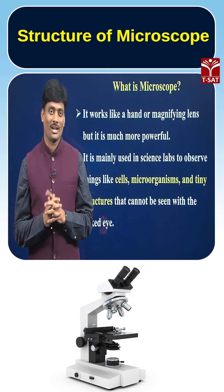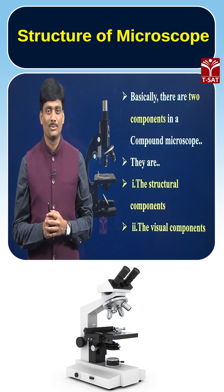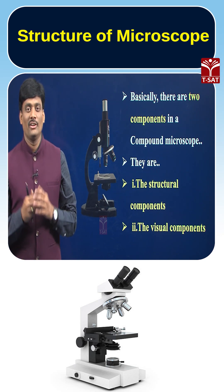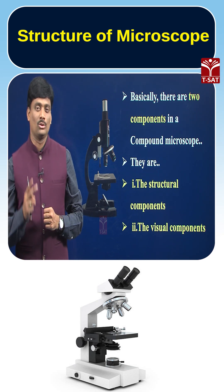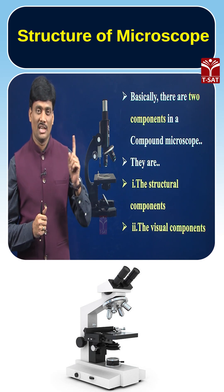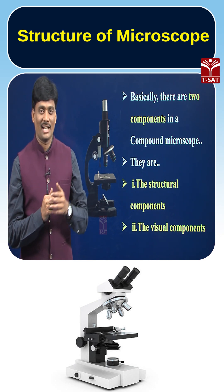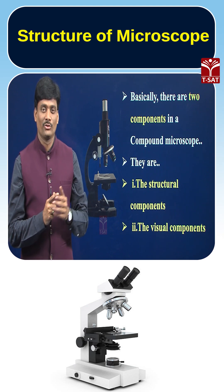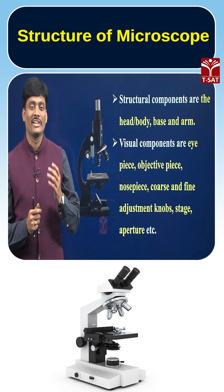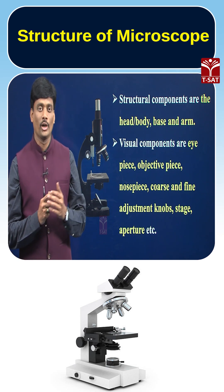When we observe the structure of a microscope, we can mainly identify two components: the first one is structural components and the second one is visual components. Under the structural components, we can see the head, also called as the body tube.